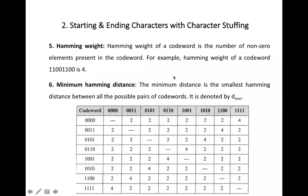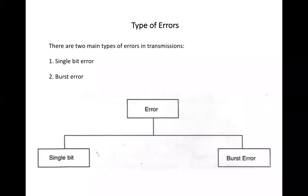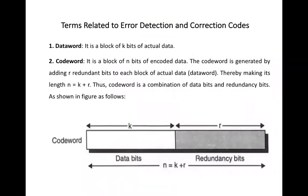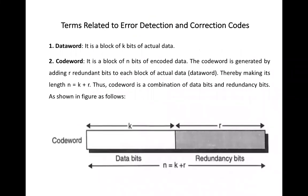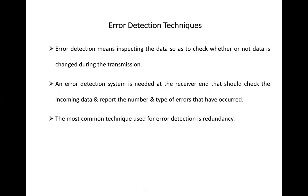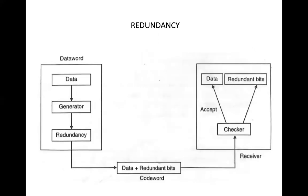That concludes today's session. We have seen what is an error and what is the error detection process and mechanism. We covered the types of errors — single bit error and burst error — and the six key terms related to error detection and correction: data word, code word, code rate, Hamming distance, Hamming weight, and minimum Hamming distance. We also discussed what error detection is and the redundancy mechanism used for it.